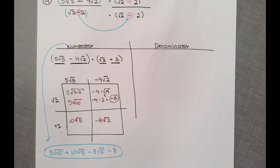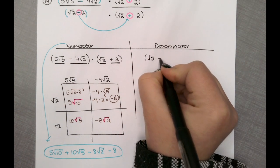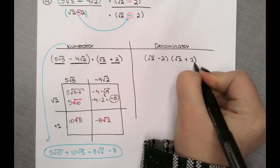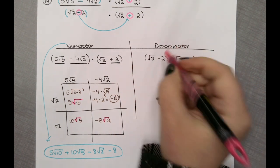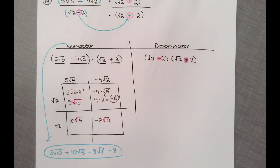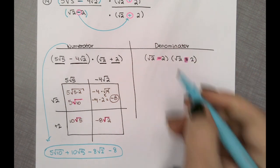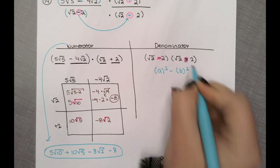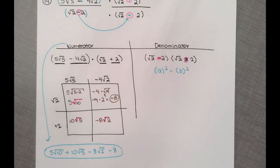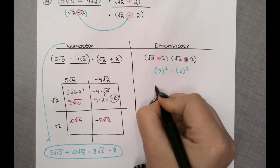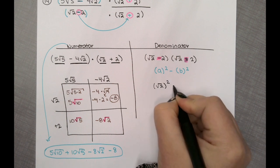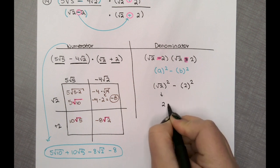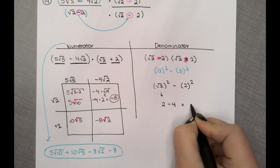For the denominator, we have conjugates: (root 2 minus 2)(root 2 plus 2). This follows the pattern a squared minus b squared. So we have (root 2) squared minus 2 squared, which gives us 2 minus 4, equaling negative 2.